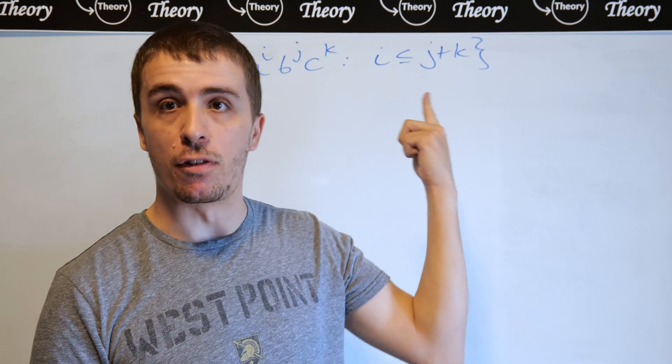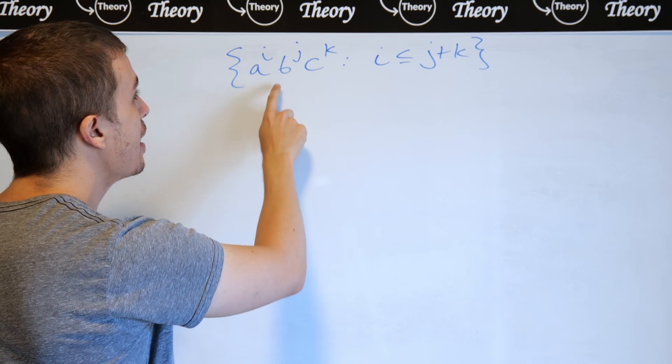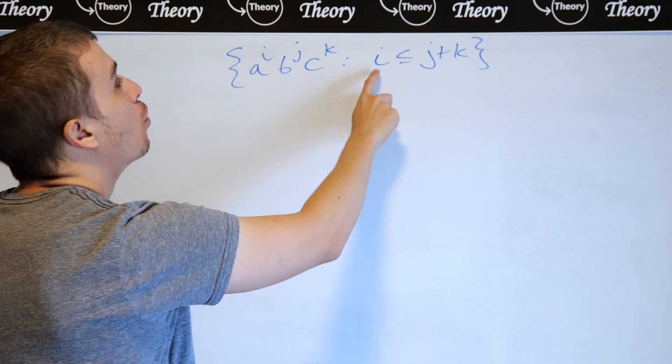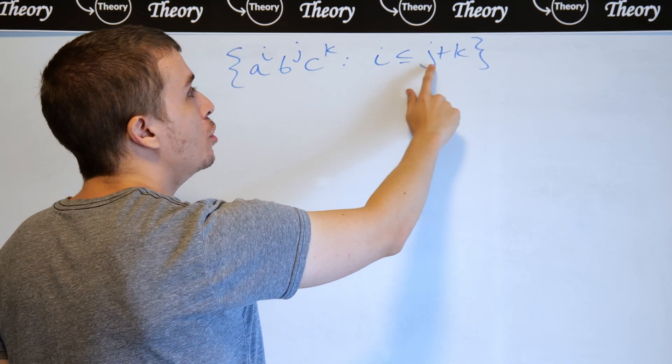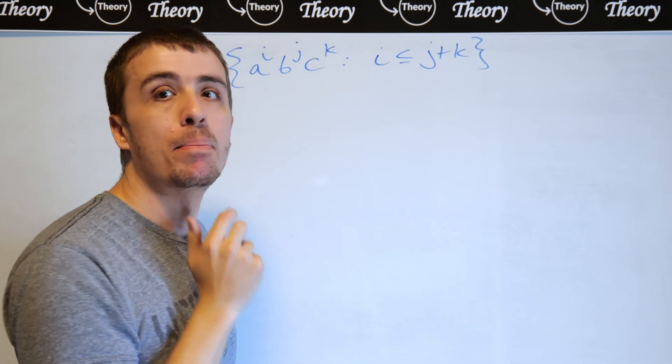Hi, so let's make a context-free grammar for this language, which is the set of all strings of the form A to the I, so I As, J Bs, and K Cs, where the number of As is at most, or equal to, the number of Bs plus the number of Cs.